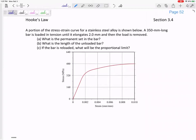In that you've got a stress-strain curve. It's not just linear, so we're gonna do a little bit of guessing, but then we'll do some calculations. So a portion of stress-strain curve is shown below. A 350 millimeter long bar is loaded in tension until it elongates two millimeters, and then the load is removed.